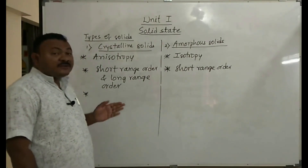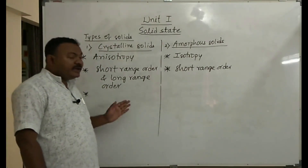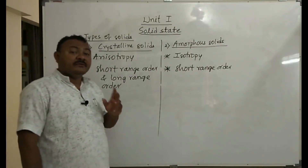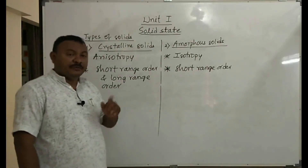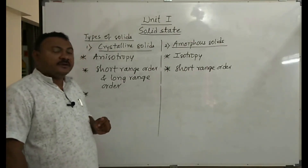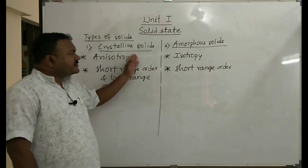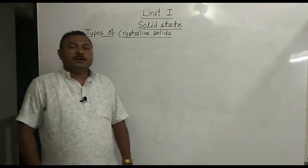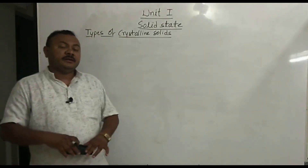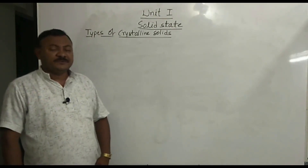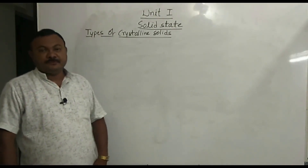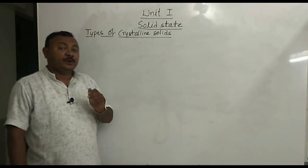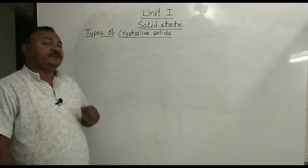Crystalline solids have a definite heat of fusion, whereas amorphous solids do not have a definite heat of fusion. Like this, we can differentiate crystalline solids and amorphous solids. After learning about solids, their properties, and types of solids, let us concentrate on types of crystalline solids.